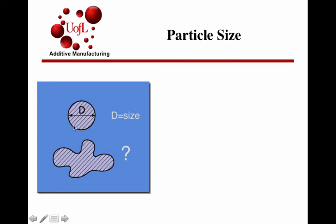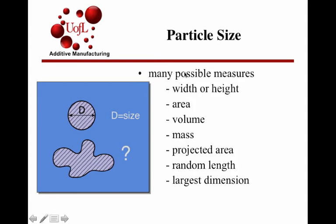If you have a regular powder shape, such as a sphere, you can specify particle size based on the diameter of the sphere. But if you have an irregular particle, then how do you prescribe what is the size? Is it this diameter? Is it that? How do we know? There are many possible measures. It's based on dimensions, width, height, based on area, based on volume occupied, based on mass, based on projected area, random length assignment, or the largest dimension. Understanding the basis for measuring and reporting particle sizes is important.